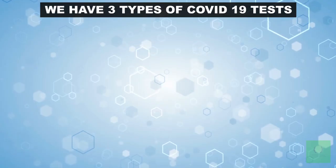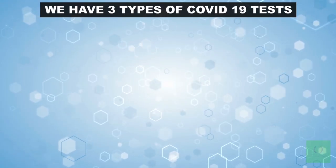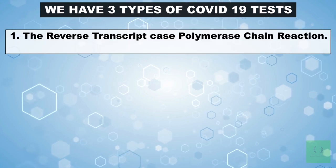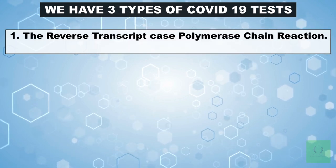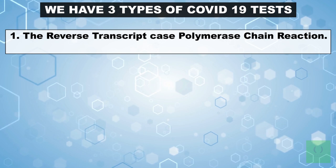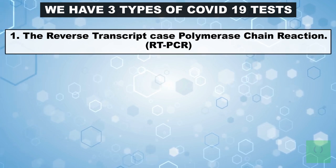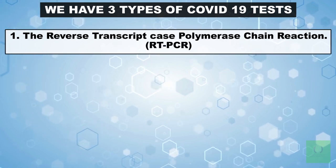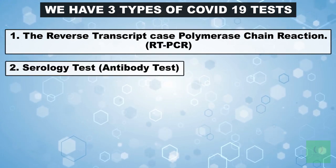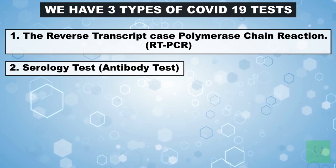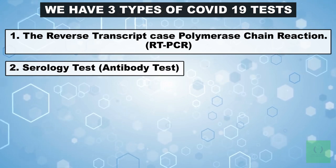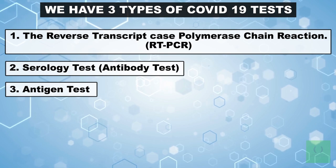We have three types of COVID-19 tests. They are: one, the reverse transcriptase polymerase chain reaction, also known as RT-PCR; two, the serology test, also known as the antibody test; and three, the antigen test.